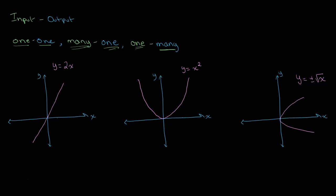In order to understand the concept of mapping better, let's look at a few graphs. Over here we have the graph of y = 2x, or x mapped to 2x. Looking at this graph, if we take a random input or x value, we see that we receive only one output or y value. We also see that for every single output value, we receive only one x or input value.